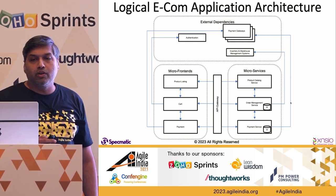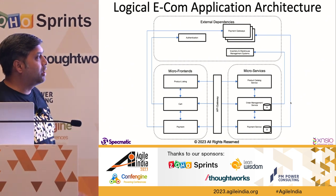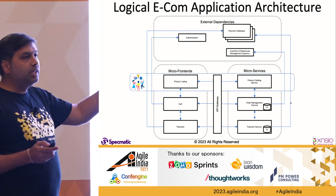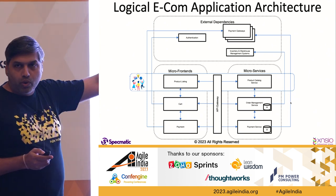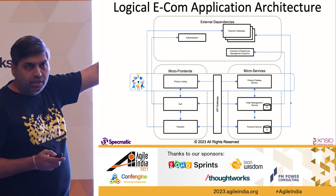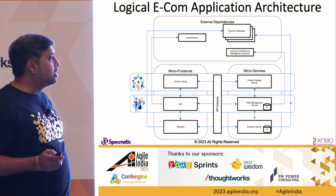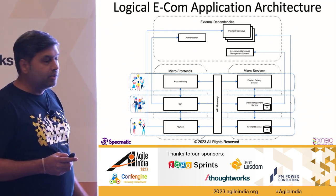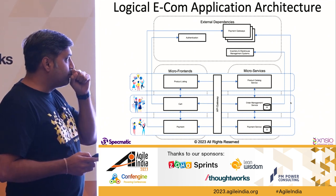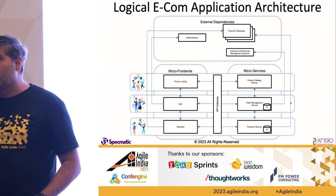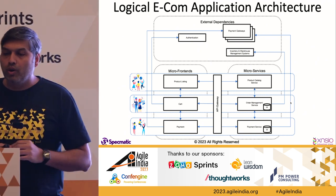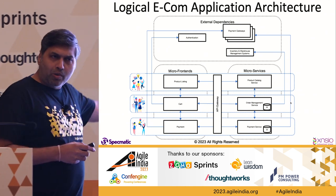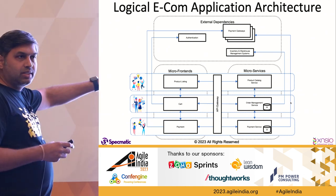In this architecture, it's common to have journey teams that own a particular journey in the process, so you may slice your teams in that manner. I'm hoping this all sounds familiar. Now, when you've set up like this, what are some of the common challenges you've faced?